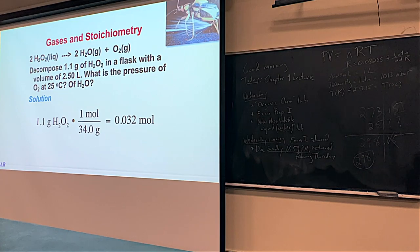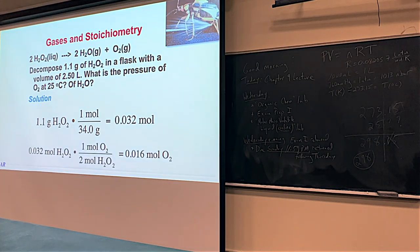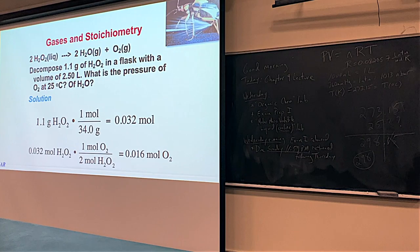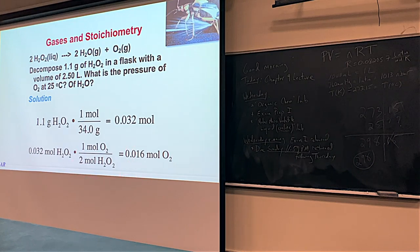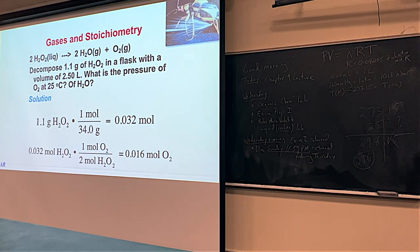Now we take the moles of H₂O₂ and convert to moles of oxygen. The balanced equation shows 2 H₂O₂ makes 1 O₂ — a 2:1 ratio. So the stoichiometric coefficient gives us one mole of oxygen from two moles of H₂O₂. Therefore 0.032 × (1/2) = 0.016 moles of O₂.